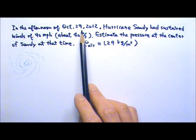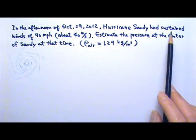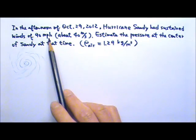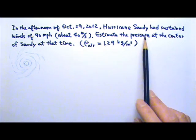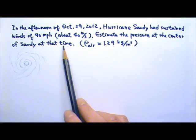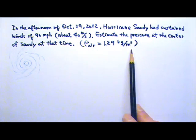In the afternoon of October 29, 2012, Hurricane Sandy had sustained winds of 90 miles per hour, about 40 meters per second. Estimate the pressure at the center of Sandy at that time. The density of air is 1.29 kilograms per meter cubed.